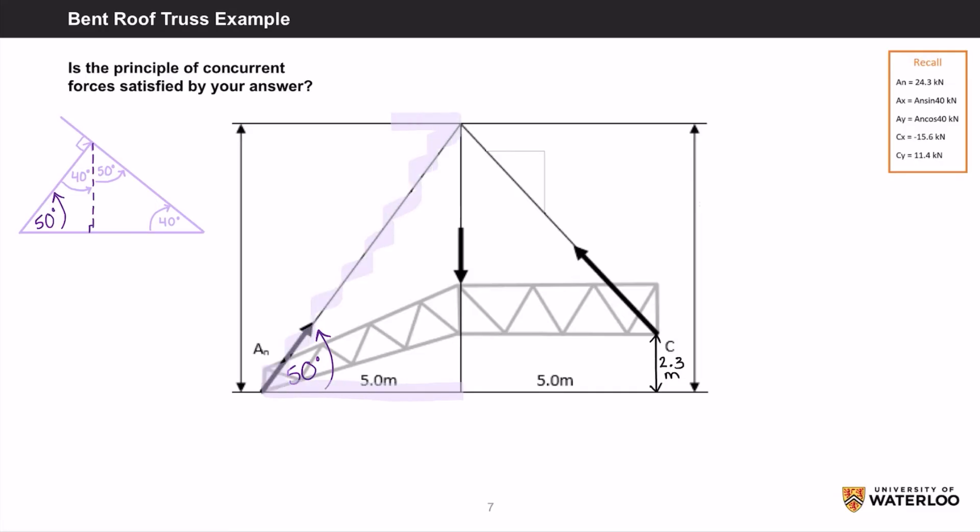Using the Z pattern, we can see that this angle here is also 50 degrees, which means that this angle is 40 degrees assuming this creates a 90 degree angle. One method we can use to see if all the forces intersect is to compare the height at which AN and the point load intersect as well as find the height at which C and the point load intersect. If they are the same height, then that means they satisfy the principle of concurrent forces.